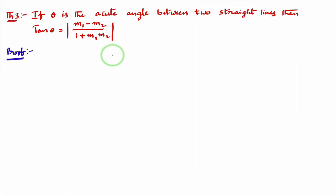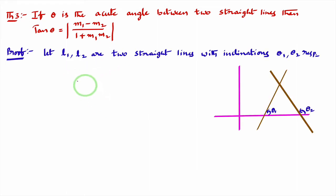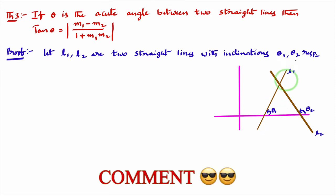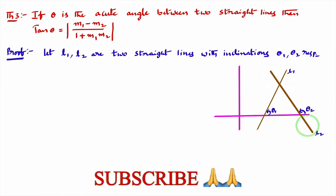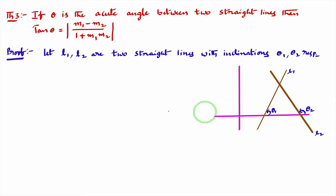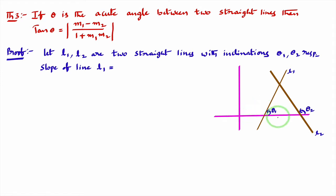First, I'll consider two straight lines l1 and l2 such that their inclinations are theta1 and theta2 respectively. This is line l1 whose inclination is theta1, and this is line l2 whose inclination is theta2. As per the definition, if we know the inclination, we can write its slope. Slope of line l1 is tan theta1, which I'll consider as m1.